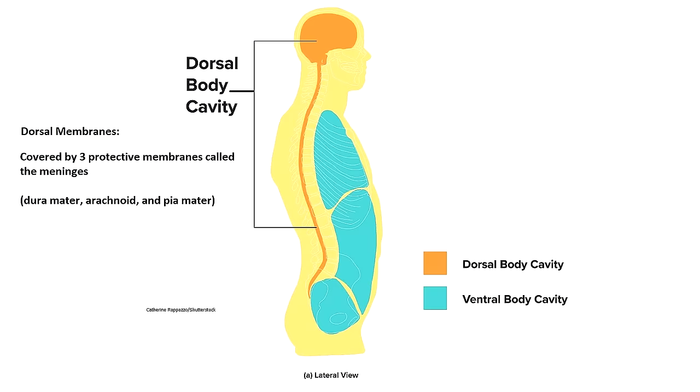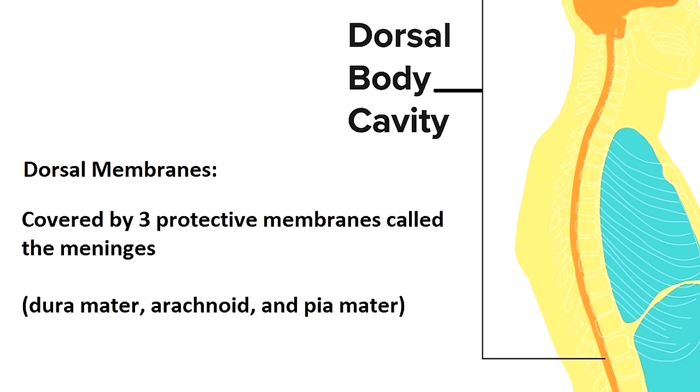The dorsal body cavity is lined with three layers of protective membranes: the dura mater, arachnoid, and pia mater, which are collectively called the meninges.